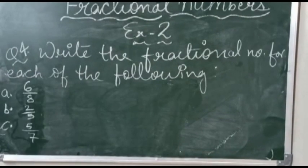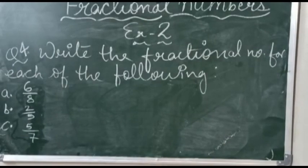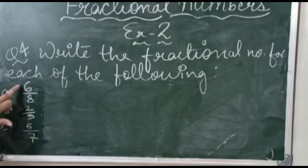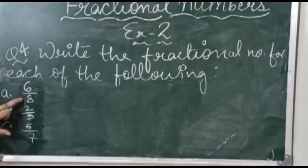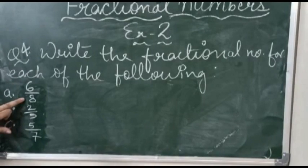The next question is: write the fractional number for each of the following. That means here we have to write the name of the fractional numbers. In part A, the fraction is 6 upon 8. We have to write it in the form of a fractional number.